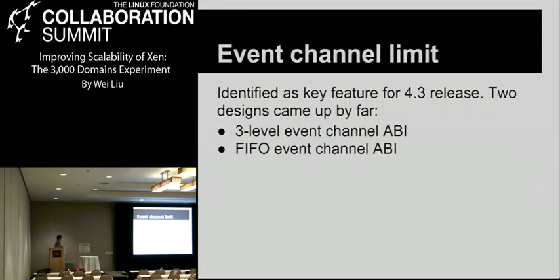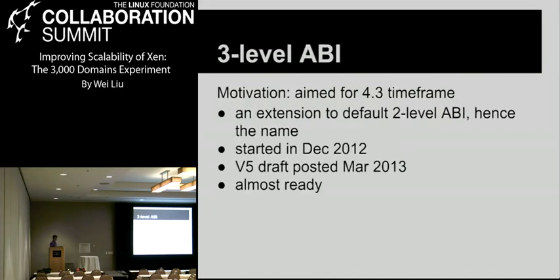Then there's the bigger problem: the event channel limit. It was identified as a key feature for both releases. Two designs came up so far. The first is the three-level event channel ABI. The second is the FIFO-based event channel ABI. The three-level ABI was designed for the near-term timeframe — it needs to be straightforward and simple. It's just an extension to the default two-level ABI, hence the name. It was started in December 2012, and version 5 of the patch has been posted and is almost ready.